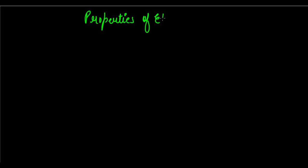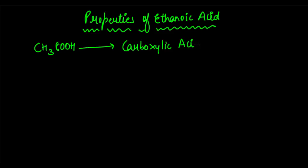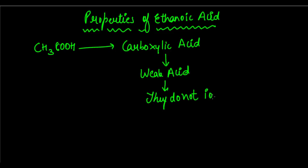Let's now move on to the properties of ethanoic acid. Ethanoic acid is basically a carboxylic acid with the formula CH3COOH. Carboxylic acids are usually weak acids — they do not completely ionize in water.